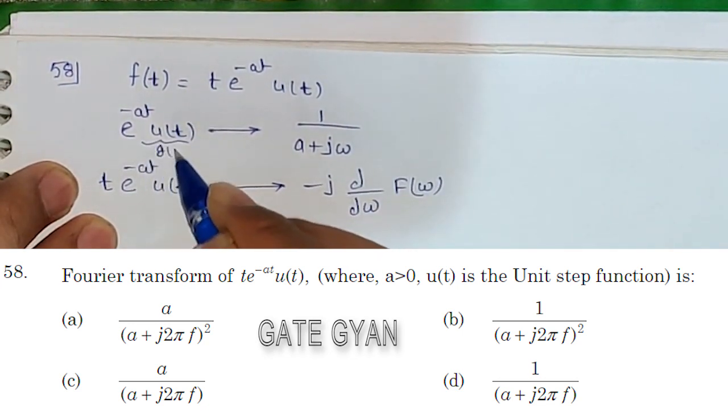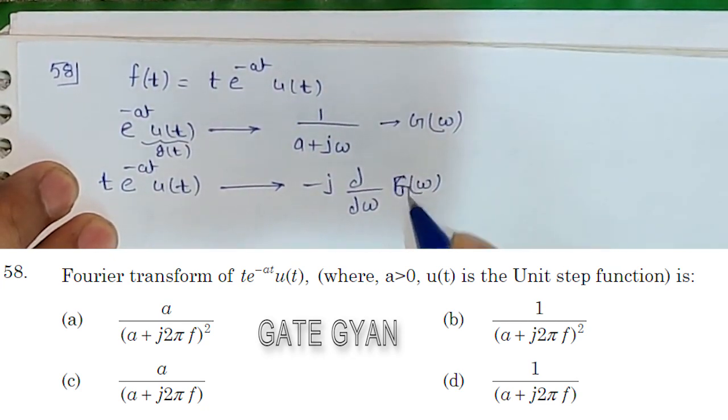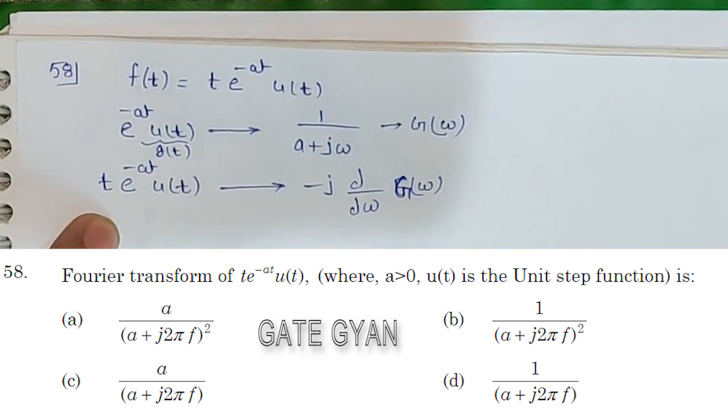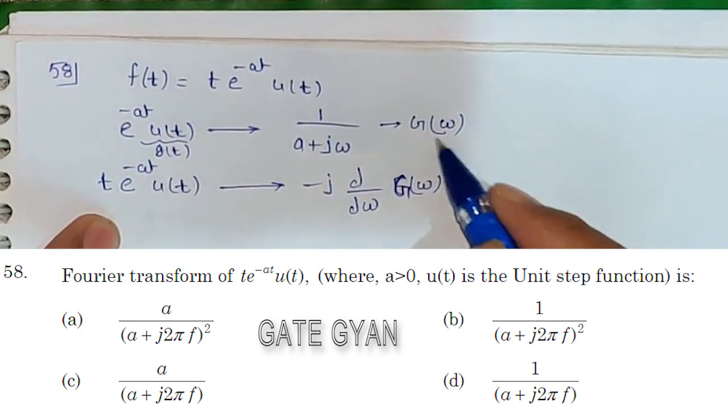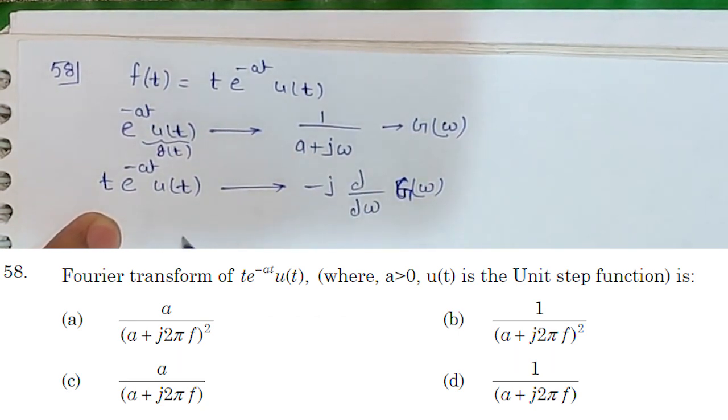If we consider e^(-at)·u(t) as g(t) and its transform as G(ω), then it can be expressed as -j·(d/dω)·G(ω). First, we differentiate with respect to ω.